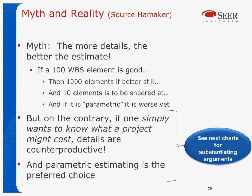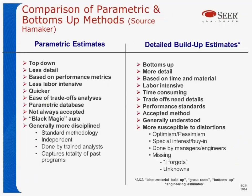Joe Hamaker, who at one time was head of cost at NASA and is now at Galerath, said there's a myth that more details means a better estimate — that if a 100-element work breakdown structure is good, then 1,000 must be better. On the contrary, if somebody wants to know the cost of a project, the details are counterproductive and parametric estimating is the preferred choice. Parametric estimates are top-down, quicker, have easier tradeoffs, and are more disciplined. Bottoms-up detailed estimates take more time, tradeoffs need details, and a lot of things can go wrong — people can be optimistic or pessimistic at the root level, and worst of all, they forget things that didn't end up in the work breakdown structure or treat everything as best-case in the bottoms-up estimate.